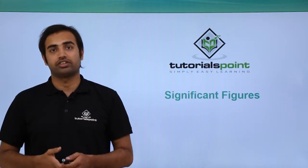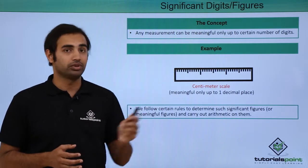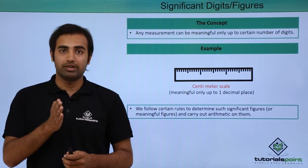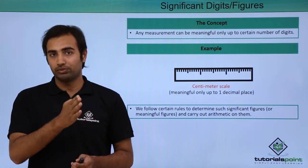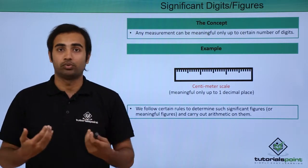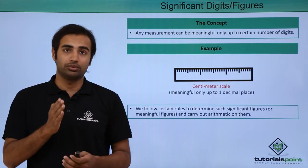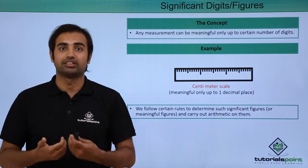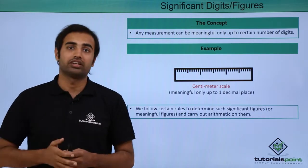Let's talk about the next topic in line which is significant figures. The first thing we should know is that any measurement can be meaningful only up to a certain number of digits. Let's take the example of a typical centimetre scale. The least count is usually 1 mm. So measurements like 2.1 cm and 3.5 cm are sensible, but a measurement of 2.875 cm using just this scale is clearly wrong because this instrument can only measure up to 1 decimal place. This kind of limitation on resolution of measuring instruments can be expressed in terms of significant figures, which we use to do multiple different arithmetics on.